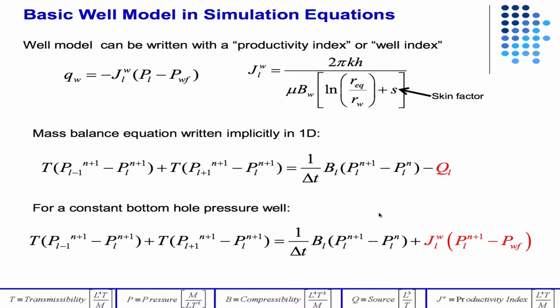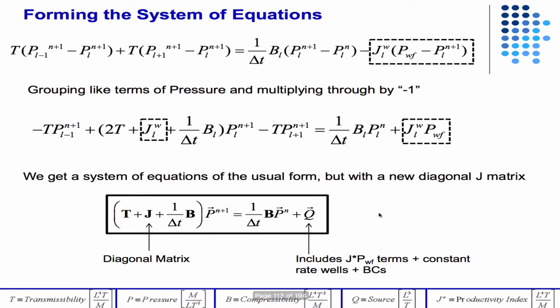So the flow rate equals to this, and then we can use those in a mass balance equation for the grid block, like we've done before. So this is just a 1D mass balance, like we've written before, but now you have this additional term over here for constant bottom hole pressure wells. And then if you just group terms like we've done before, ultimately you get a system of equations that has this structure where J is a diagonal matrix.